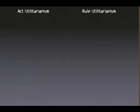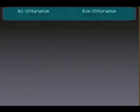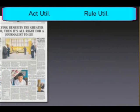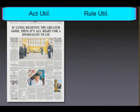A useful example that explains the difference between act and rule utilitarianism is this one. Under Act Utilitarianism, it would be okay to say: if lying benefits the greater good, then it's alright for a journalist to lie.